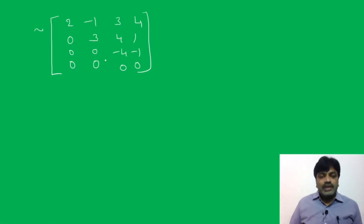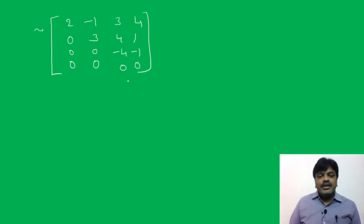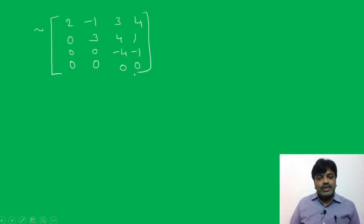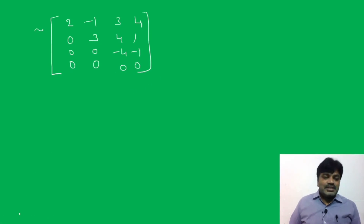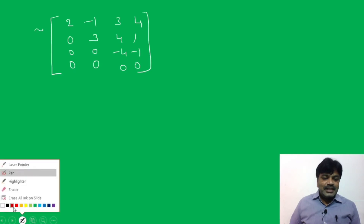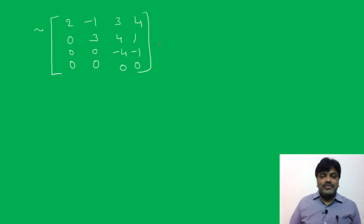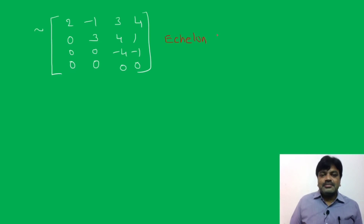So clearly, here we get the echelon form. It satisfies the echelon properties — three properties. If you don't know the three properties, watch the first video. This matrix form is echelon form.